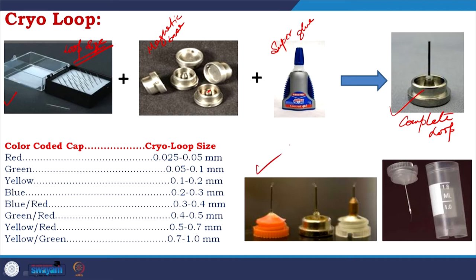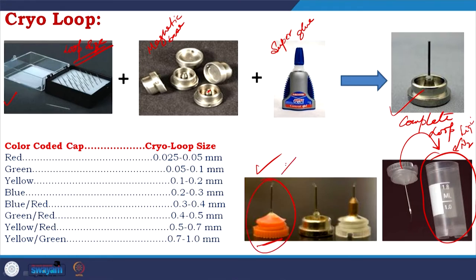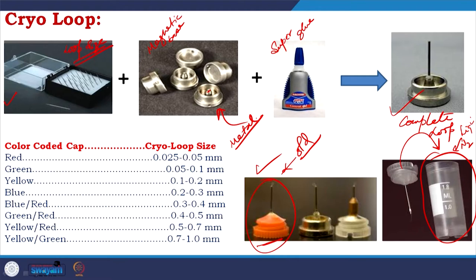These are examples of loops, and this is where you will have liquid nitrogen later — you put your crystal-containing loop here. There is a loop coloring system on the loop base: red is 0.025 to 0.05 mm, green is 0.05 to 0.1 mm, yellow is 0.1 to 0.2 mm, blue is 0.2 to 0.3 mm. But that was old. Nowadays we use metal loops without the color codes, and you write behind the size of the loop.